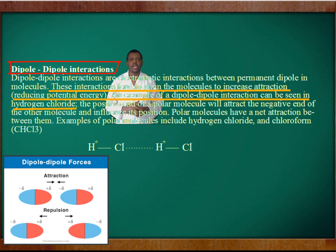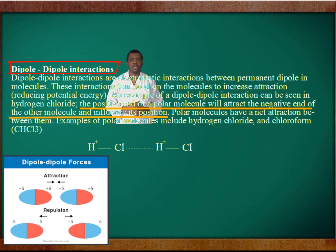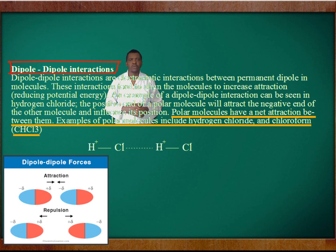An example of a dipole-dipole interaction can be seen in hydrogen chloride. The positive end of a polar molecule will attract the negative end of another molecule and influence its position. Polar molecules have a net attraction between them. Examples of polar molecules include hydrogen chloride and chloroform.